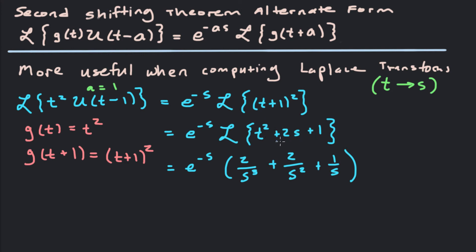Foiling out (t+1)² gives t² + 2t + 1. Taking the Laplace transform of each piece: t² gives 2/s³, 2t gives 2/s², and 1 gives 1/s. So the Laplace transform of t²·u(t-1) is e^(-s)·(2/s³ + 2/s² + 1/s). That's how we use the second shifting theorem to take Laplace transforms.